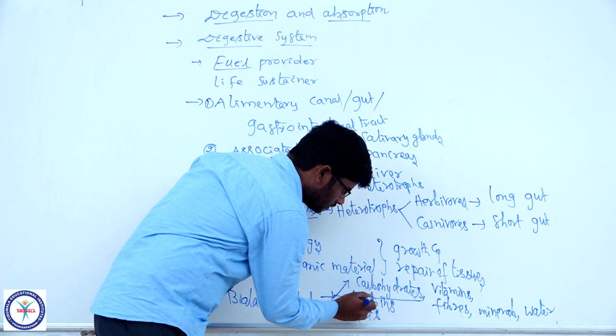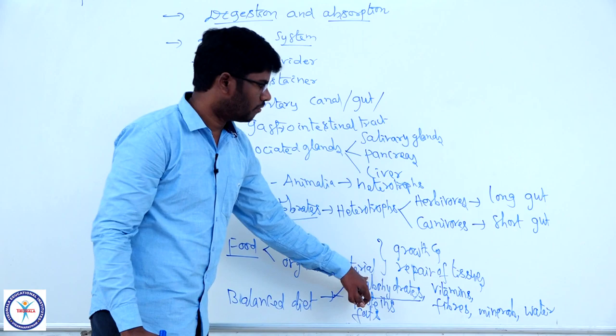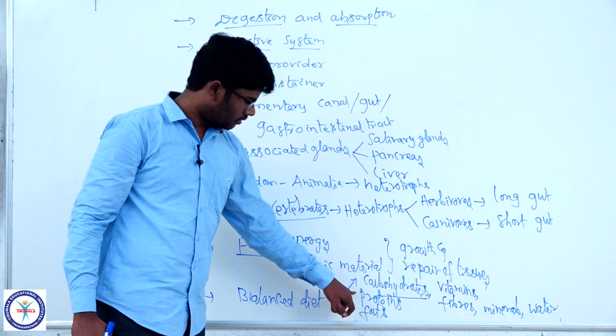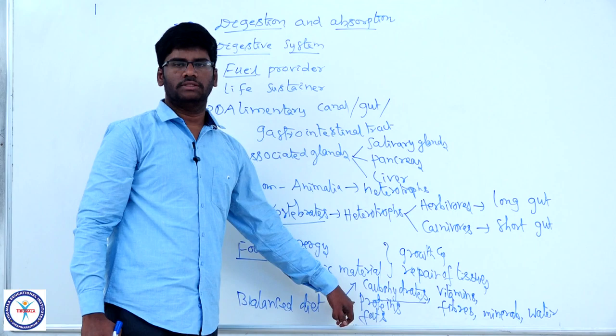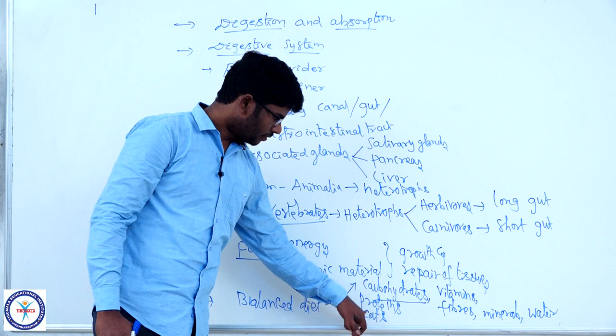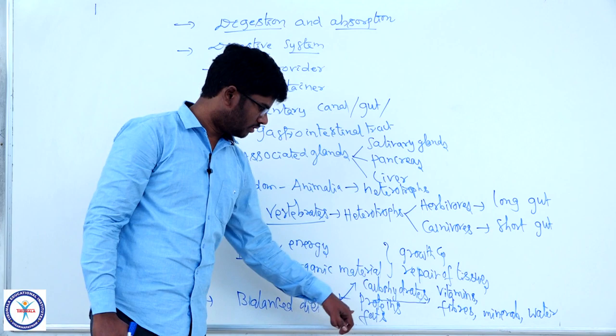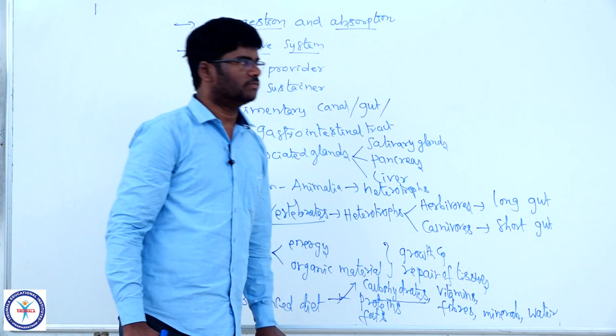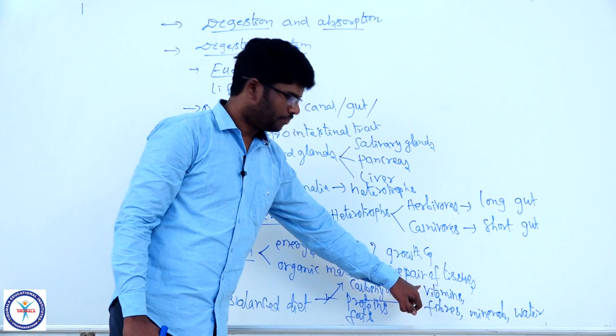Carbohydrates are generally called as chief energy sources; they provide energy in the body. Proteins are generally considered as bodybuilders and enzymes — 99% of enzymes are proteins. Fats are energy reserves; excess energy not utilized is converted into fats and stored in adipose tissue. Vitamins are of two types: water soluble and fat soluble; the body requires vitamins in small quantity but they play a very important role in metabolic activities.